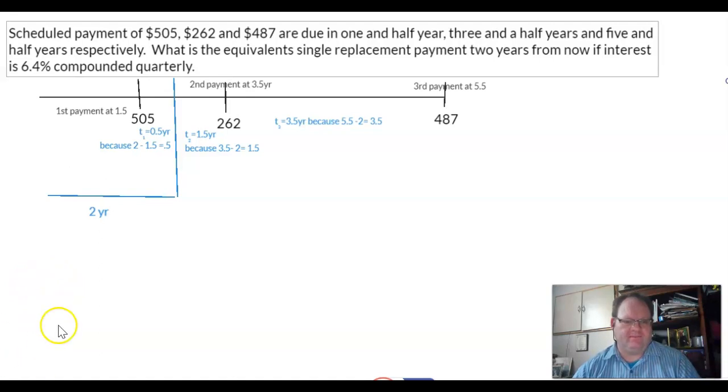So for the very first one, it's moving forward. So it's a future value equation. And the second and third payments are moving back in time. So they are present value equations.